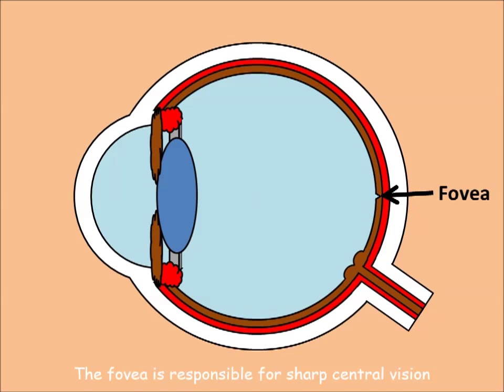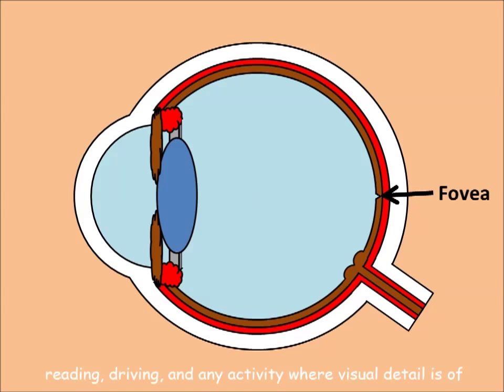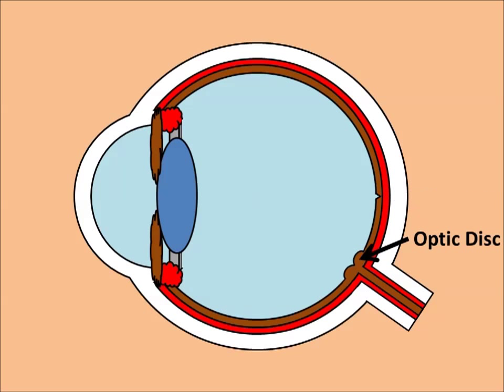The fovea is responsible for sharp central vision, also called foveal vision, which is necessary in humans for reading, driving, and any activity where visual detail is of primary importance.